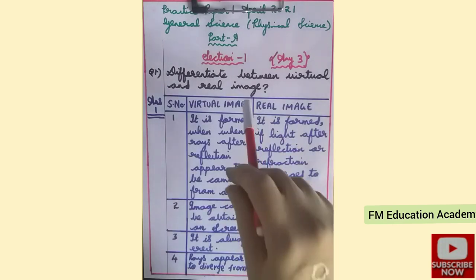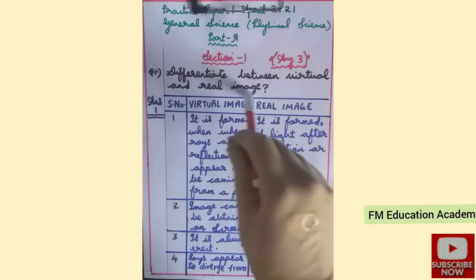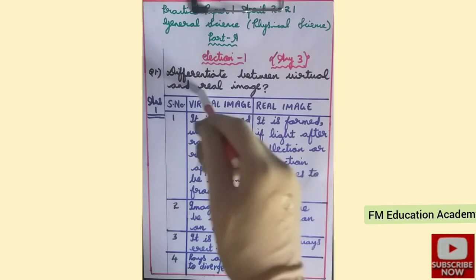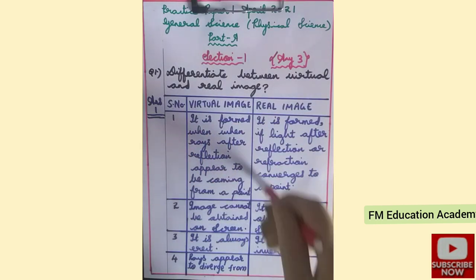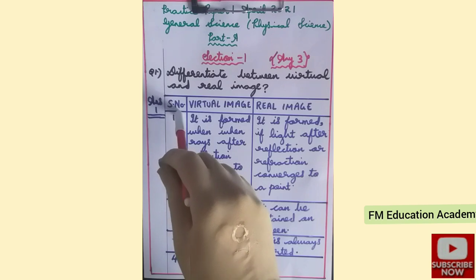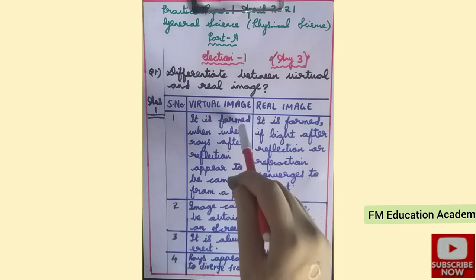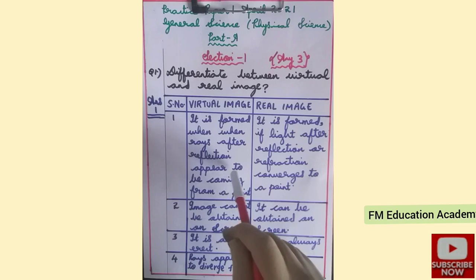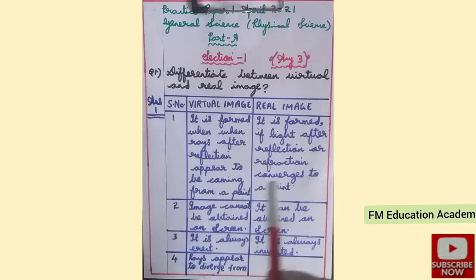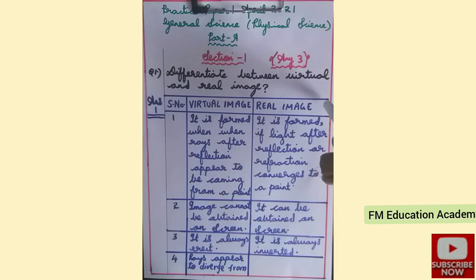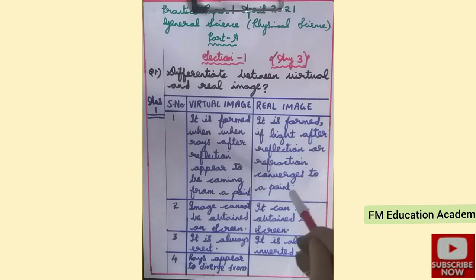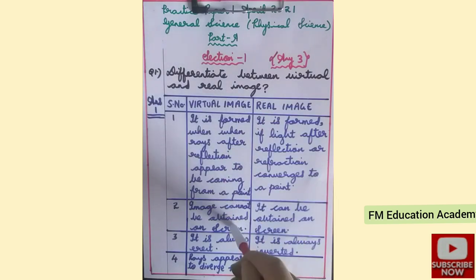For Question 1, on the left side we will write 'virtual image' and on the right side 'real image', with a column for serial number to keep it neat. First difference: a virtual image is formed when rays after deflection appear to be coming from a point. A real image is formed when light rays after reflection or refraction converge to a point. A virtual image cannot be obtained on a screen, but a real image can be obtained on a screen.